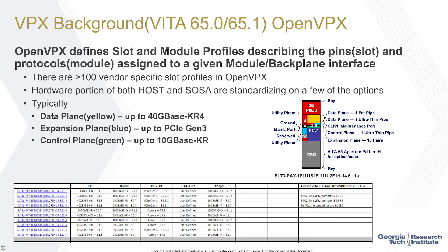From the slot profile alone, you don't yet know what the actual protocols are. VITA 65.0 and VITA 65.1 also define module profiles, shown in the bottom table. The data plane (yellow) currently supports up to 40 GBase-KR4, with 100G KR4 coming soon. The expansion plane is currently Gen 3 with Gen 4 coming, and the control plane supports up to 10G with profiles supporting 25 Base-KR. The slot profile tells you where the planes go on which pins, but the module profile tells you what protocols are used.